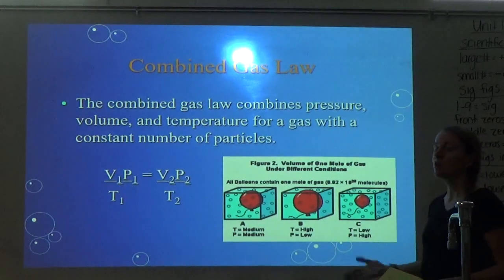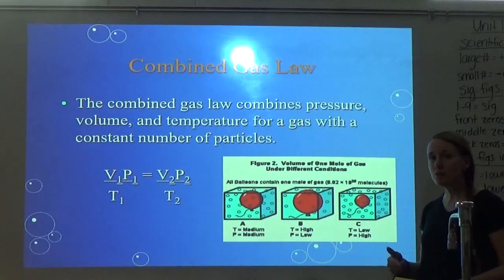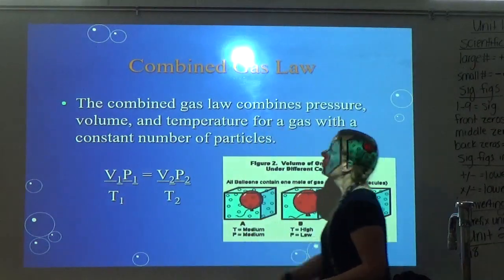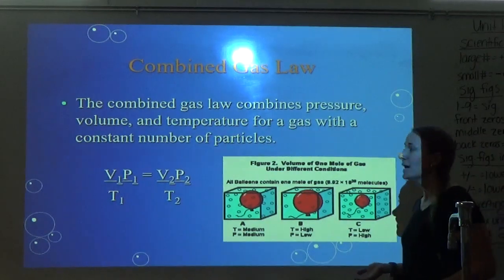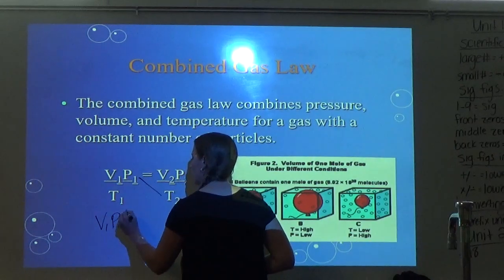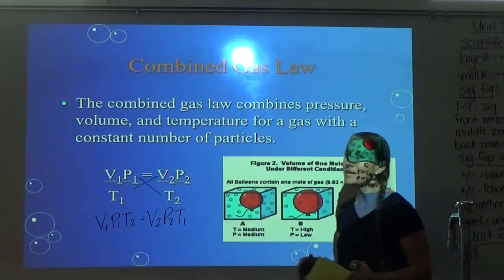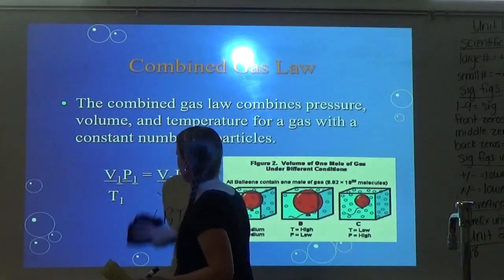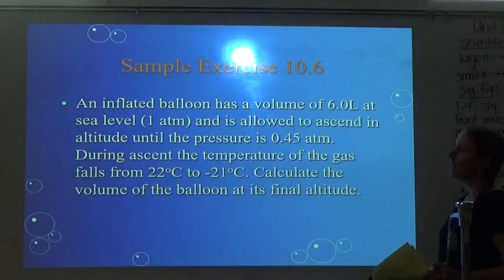Now let's look at the combined gas law. Boyle's Law is V and P. Charles' Law is V and T. Gay-Lussac's Law is P and T. Combined gas law is all three — you have V's, P's, and T's. The combined gas law combines pressure, volume, and temperature for a gas with a constant number of particles. In AP, you should be able to solve for something in the denominator.